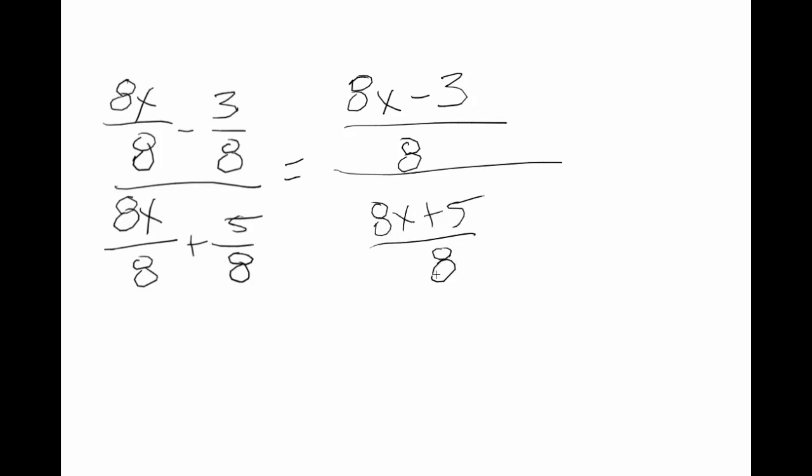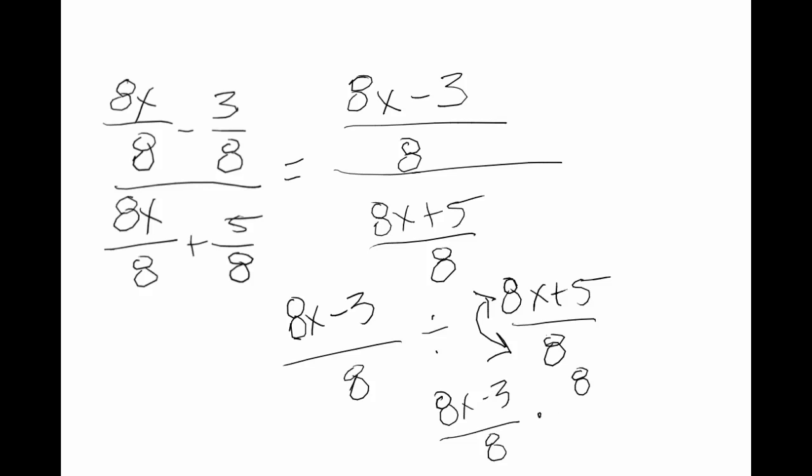Now I have two fractions that I'm dividing. And I can treat that with the same fractional division rules that I already know. So 8x minus 3 over 8 divided by 8x plus 5 over 8 means that I just flip this guy and multiply. So I have 8x minus 3 over 8 times 8 over 8x plus 5.